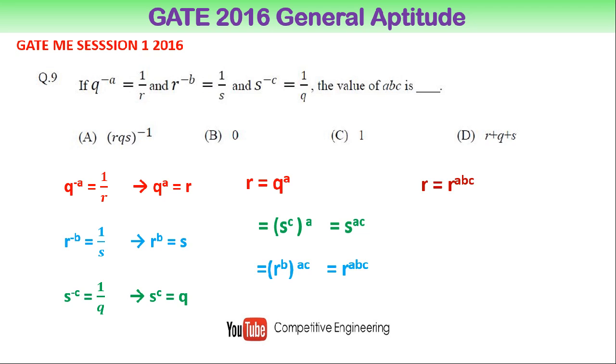Then what should be the value of ABC such that R = R^(ABC)? ABC = 1. So the correct option is option C.